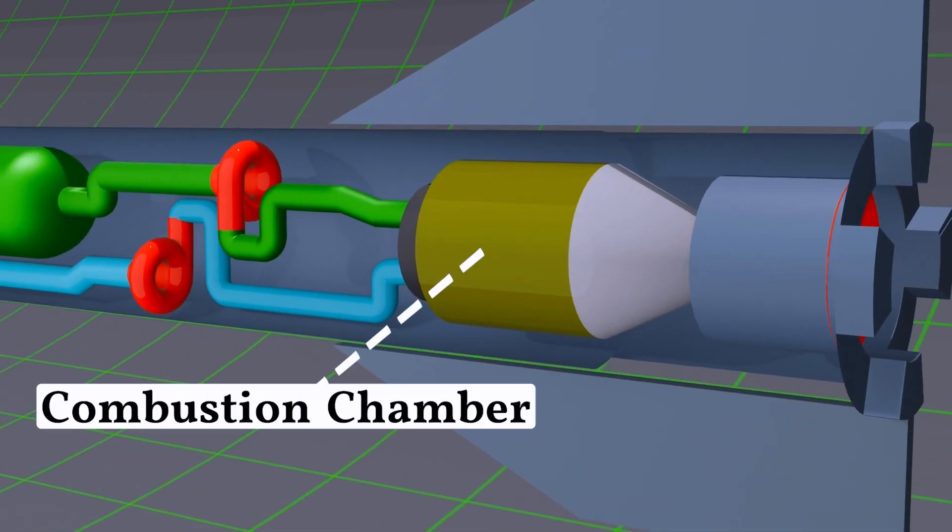And this is the combustion chamber. Here, the fuel and oxidizer mix together, ignite, and produce a huge amount of gas.